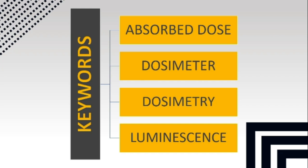Luminescence: upon absorption of radiation, some materials retain parts of their energy in a metastable state. This energy is then released in the form of ultraviolet, visible, or infrared light. This phenomenon is known as luminescence.